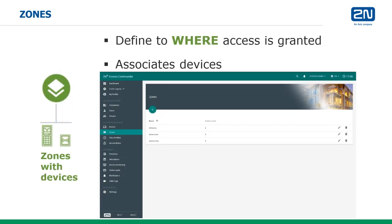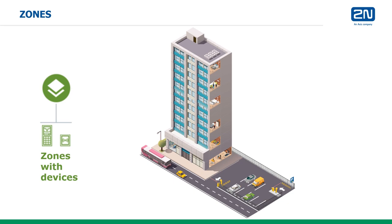After devices have been added, they must be assigned to a zone. A device may only be assigned to a single zone, but each zone may contain several devices and can be a member of multiple companies. Zones are basically areas we want to allow access for certain groups of users. Although a zone can be a whole building, there's often a need to divide access into specific areas for specific groups of users.